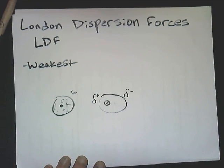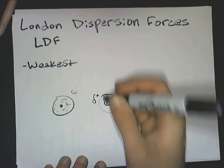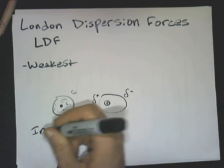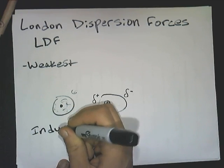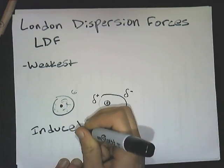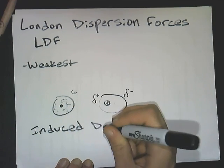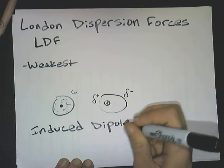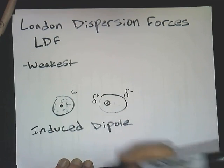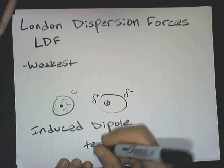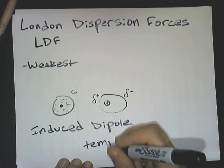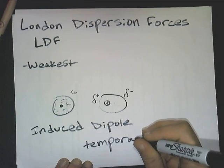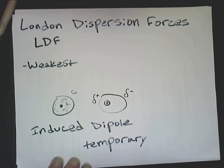This is what we call an induced dipole. This is not a regular dipole, because it is only induced — it is temporary. It is not permanent like dipoles that we see in polar molecules.